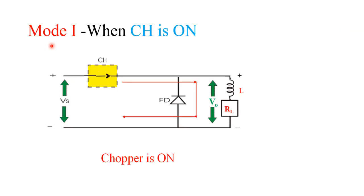The chopper has two modes of operation: when the chopper is on and when the chopper is off. When the chopper is on, the switch is closed. The supply voltage connects to the load, the freewheel diode is reverse biased, and current flows through the inductor and load resistance RL. The inductor starts charging — this node is positive and this node is negative — and the inductor current rises from its minimum to maximum value. The output voltage equals the supply voltage.